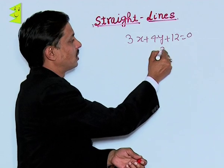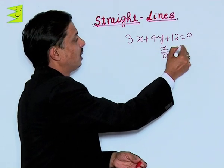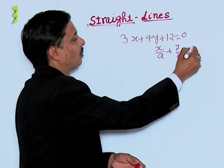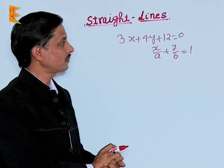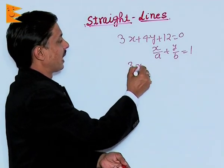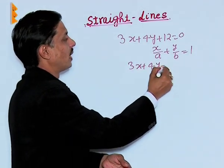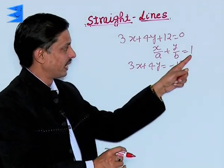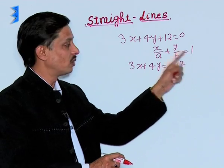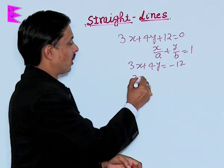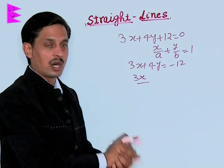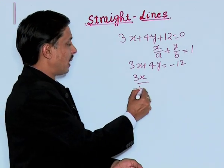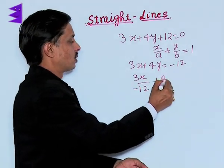The intercept form's result is x upon a plus y upon b equals 1. This is 3x plus 4y equals minus 12. But on the right-hand side, it must be 1. So to convert the right-hand side to 1, we will divide it by minus 12.